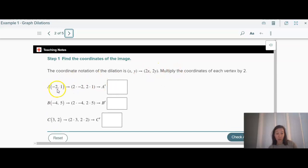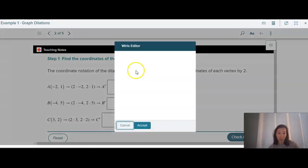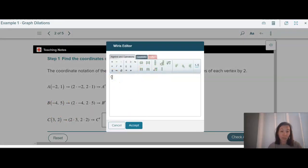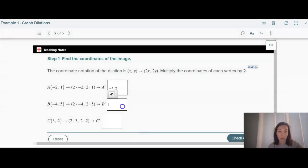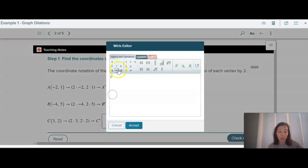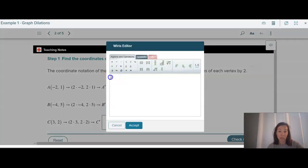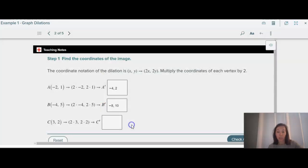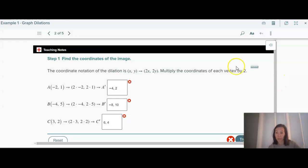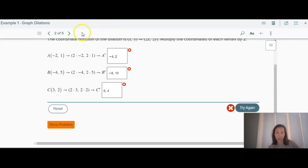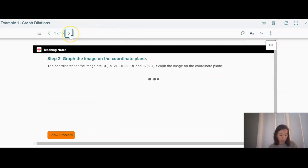So negative 2, 1 gets multiplied by 2, negative 4, 5, and all these get multiplied by 2. So we get here, negative 4, 2. For that one, we get negative 4 times 2 is negative 8, 10 for this one, and we get 6, 4 for this one. I didn't have parentheses, so it's not accepting my answer. But you can fill those in.